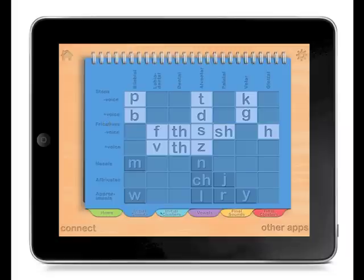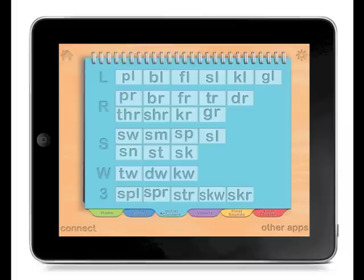On the aqua tab are initial clusters, 29 combinations of phonemes that appear in the onset of the syllable. Here, we'll select all but the three sound clusters.